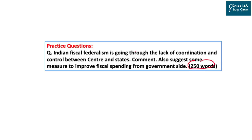In this practice question, you have to start by defining or explaining the current situation of fiscal federalism in the country and explain at least four to five points on why there is a lack of coordination between centre and state on fiscal federalism. The next five to six points should be measures to improve fiscal spending from the government side, concluding with an important data set, scheme, or recent initiative taken by the Government of India.